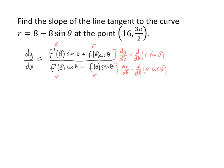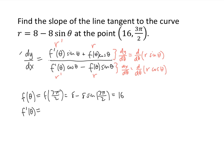Now let's apply the formula. Our f of theta, our r, is 8 minus 8 sine theta. Let's figure out the values of all the pieces. f of theta at 3π/2 is 16 — we can verify that. f prime of theta is negative 8 cosine theta, so f prime of 3π/2 is negative 8 times cosine of 3π/2, but cosine of 3π/2 is 0, so f prime of 3π/2 equals 0.